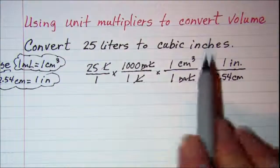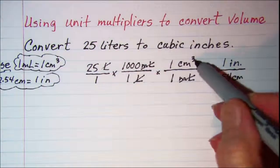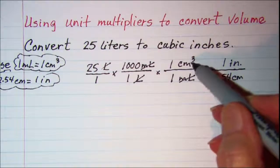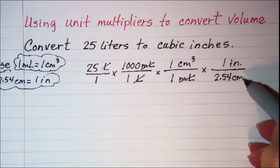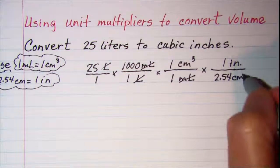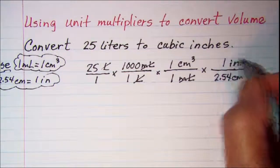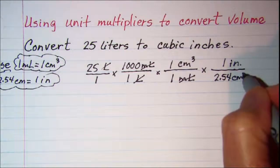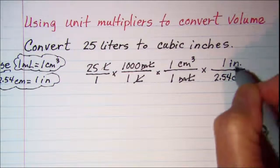Now the thing about volume is this is to the third power and this is only to the first power. So what I need to do then to be able to cancel these off is I need to cube every factor here including the units.